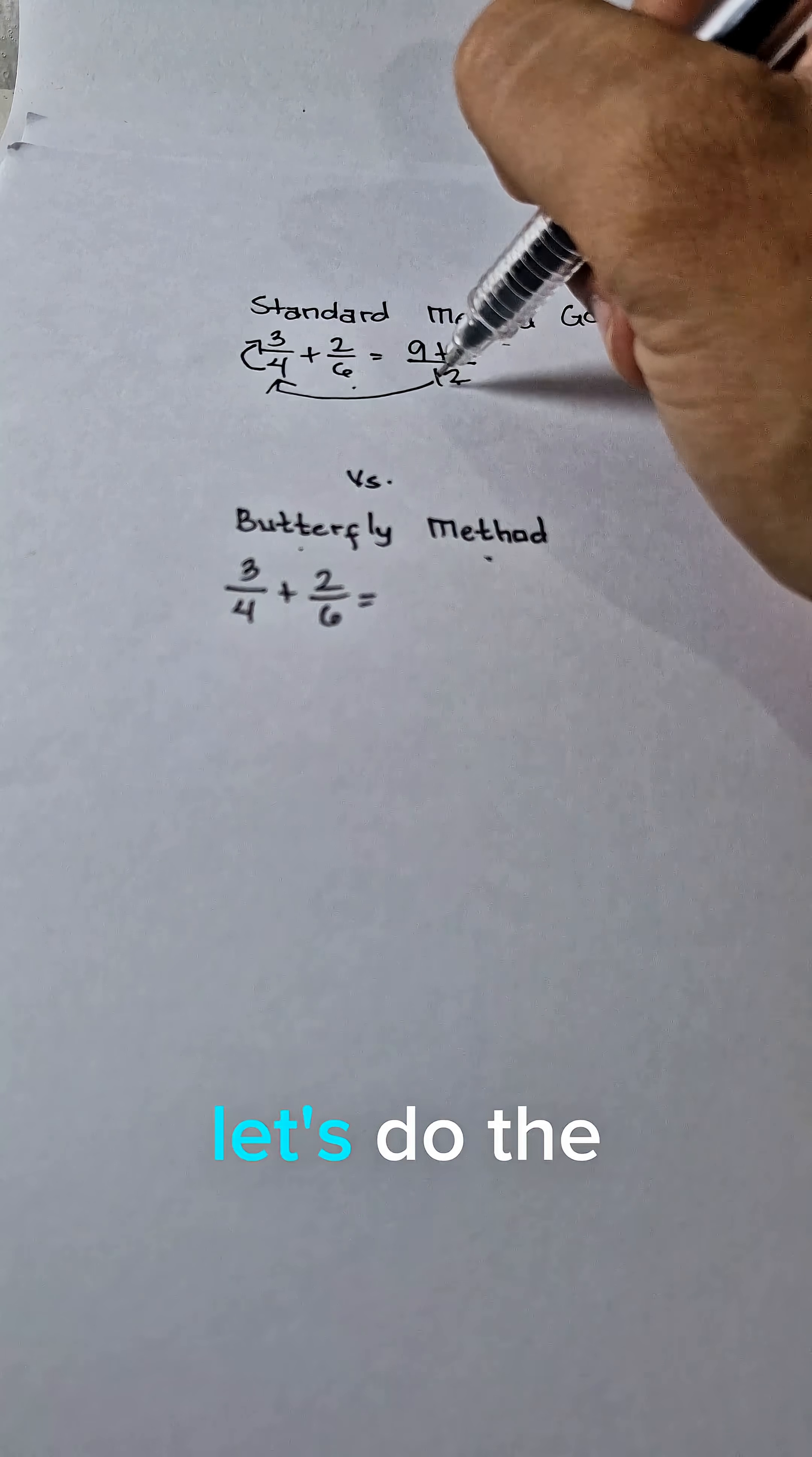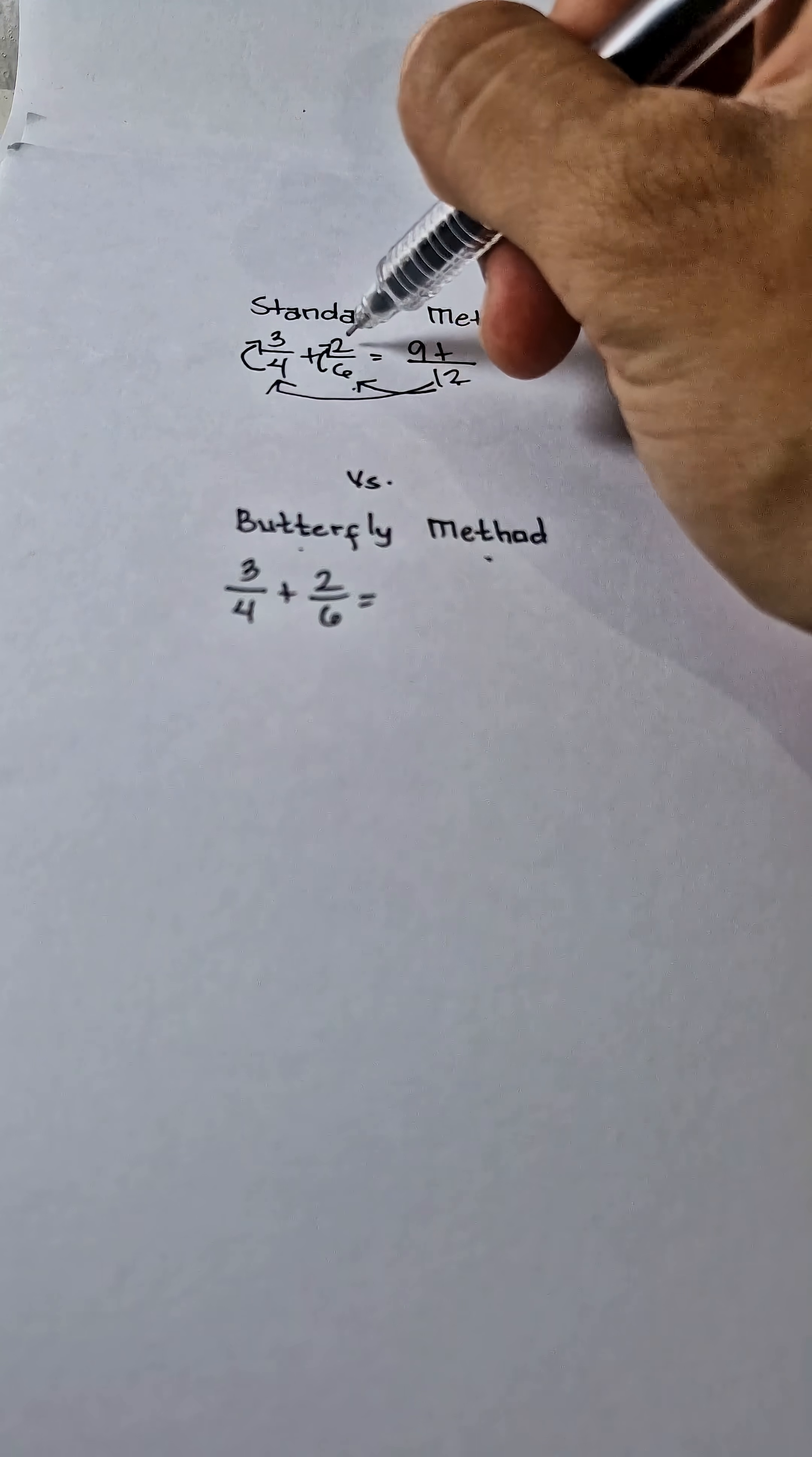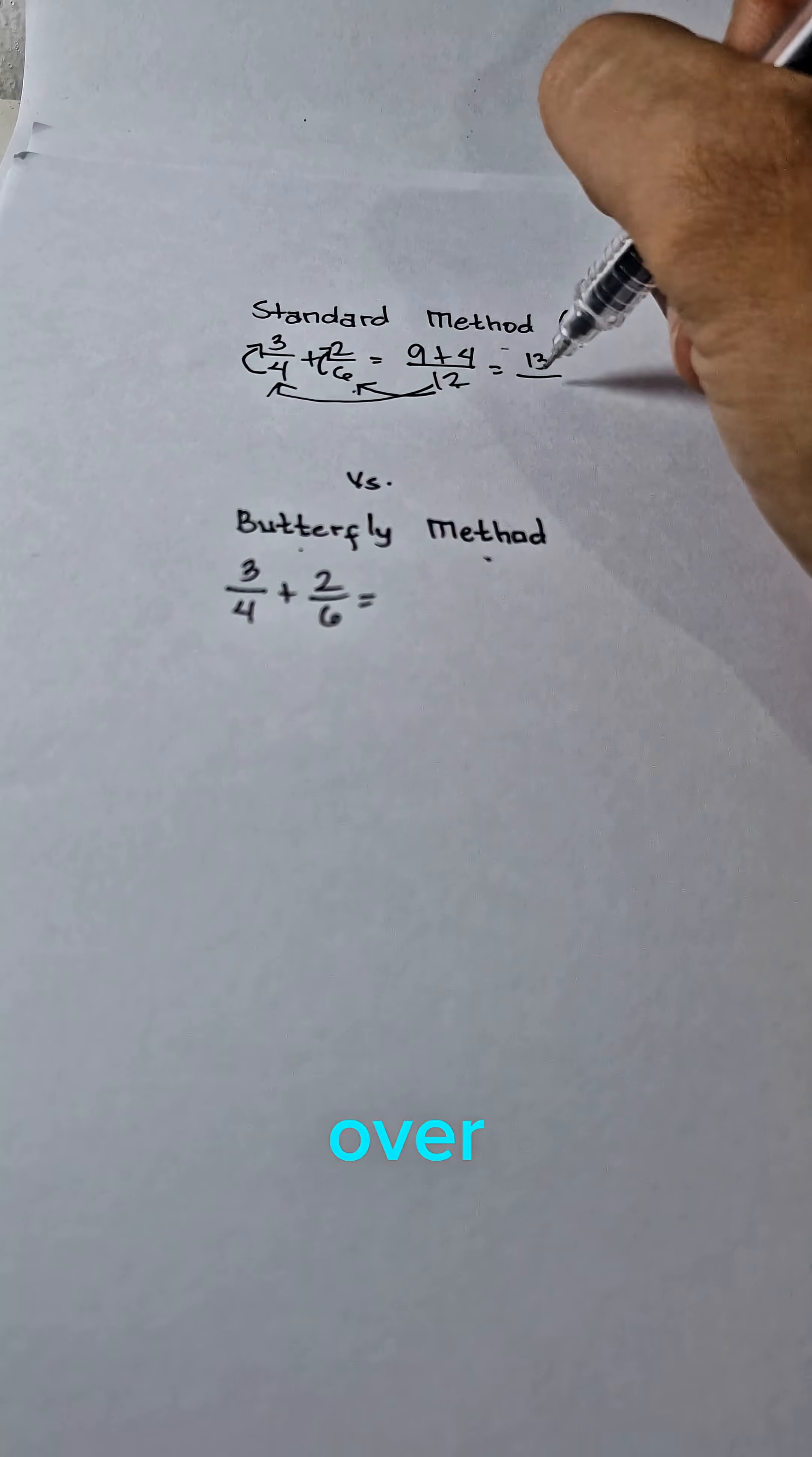Let's do the same procedure to the next fraction. 12 divided by 6, the answer is 2 multiplied to its numerator, 2. 2 times 2 is 4. And 9 plus 4 is 13 over 12.